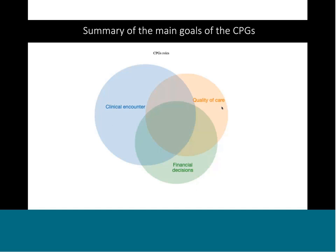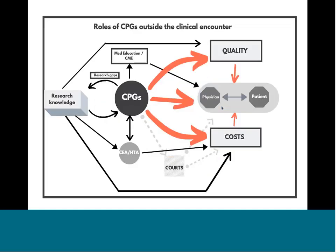This figure summarizes how clinical practice guidelines are at the center, and how the roles described could have an impact on the final physician-patient decision, which is the core of this process in the healthcare system. Clinical practice guidelines could inform quality of care decisions at different levels, and this quality of care will have some impact on the physician-patient clinical encounter. The guidelines could also have an impact on cost decisions, which in turn will affect the decision the clinician takes. Minor roles include medical education and CME, through which guidelines could inform the process.